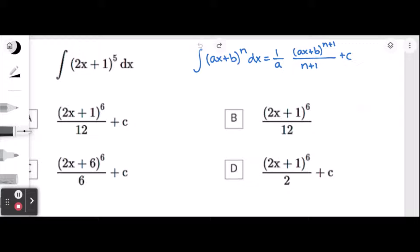The rule says the indefinite integral of ax plus b to the power of n dx equals 1 over the coefficient of x, which is a, then ax plus b to the power of n plus 1 over the power, which is n plus 1, plus c. The reason we add plus c is because this is called the indefinite integral.